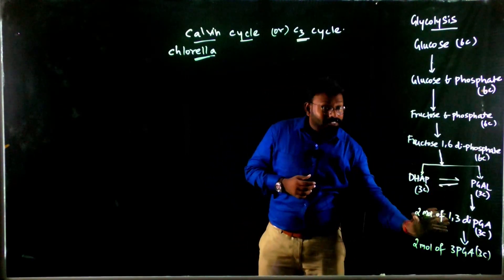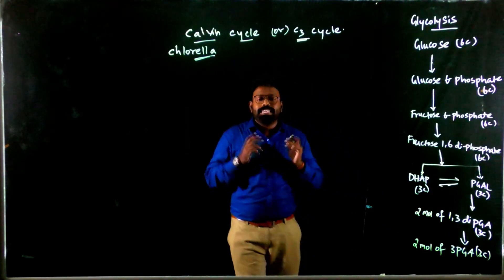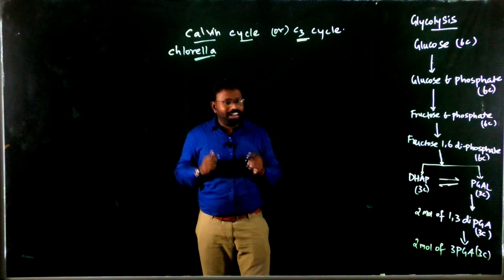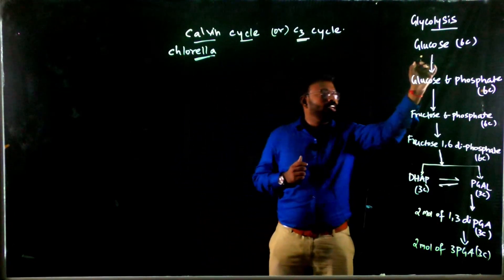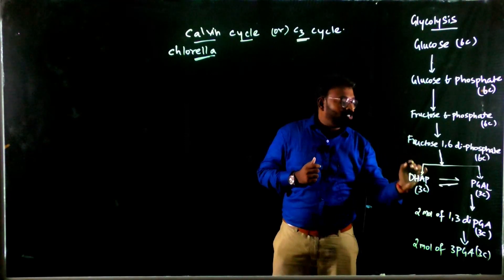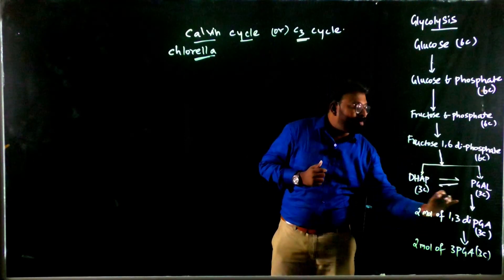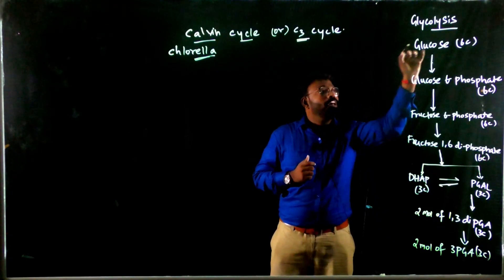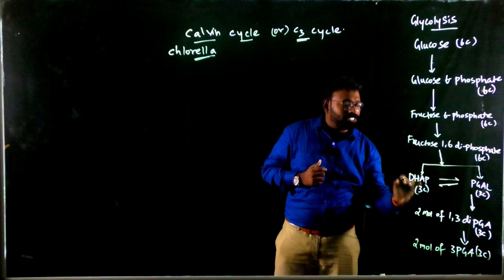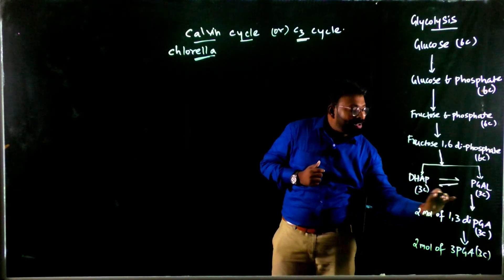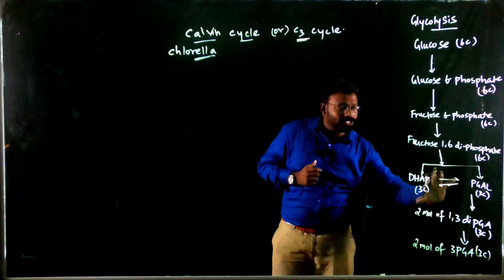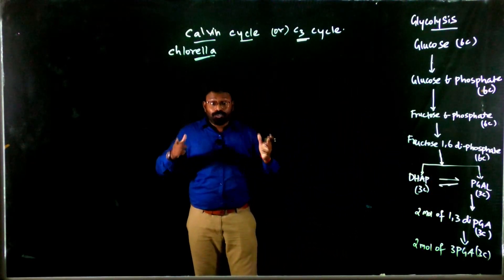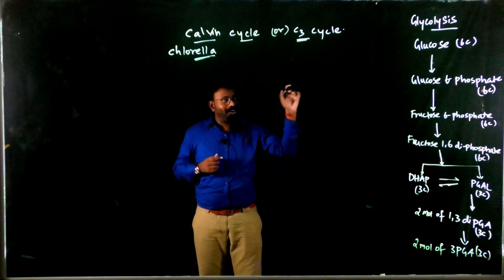Why do we discuss glycolysis in Calvin cycle? Because Calvin cycle can be termed the reversal of glycolysis. So remember the shortcut: glucose, glucose, fructose, fructose, PGAL, 1,3-diPGA, 3-PGA. Keep this shortcut in mind — once we finish this pathway, you'll understand the importance of this shortcut.